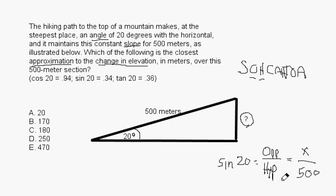Now, they give us sine of 20 right here. Sine of 20 is equal to .34. So I'm going to bring this over here, and I'm going to say .34, which is sine of 20, is equal to X over 500. And now we solve for X.